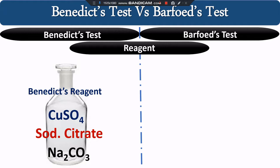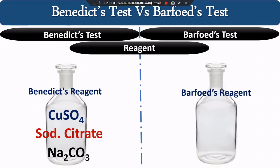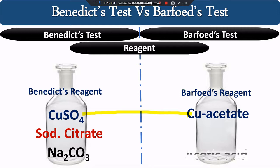In the Barfoed test, the Barfoed reagent contains two components. The first is copper acetate, which provides Cu²⁺ ions — so copper acetate here is equivalent to copper sulfate in the Benedict test, as both provide Cu²⁺. The second component is glacial acetic acid, which makes the environment acidic, whereas sodium carbonate in the Benedict test makes the environment alkaline.